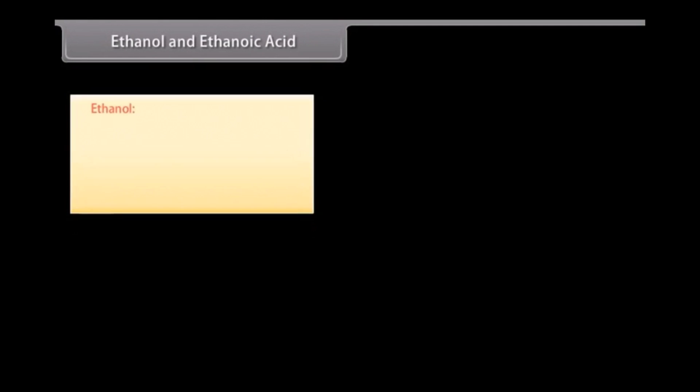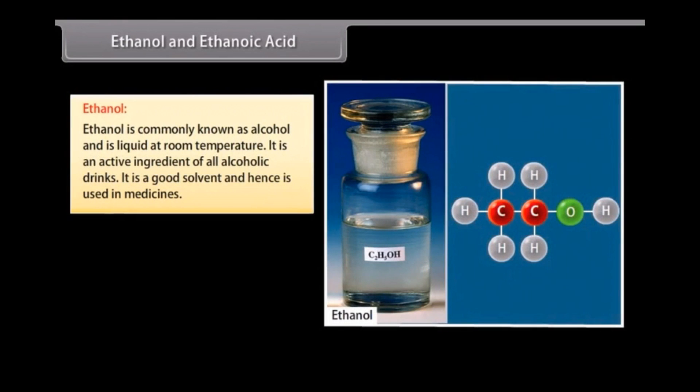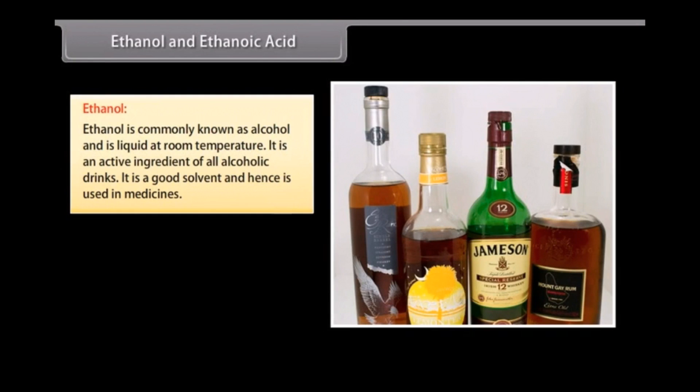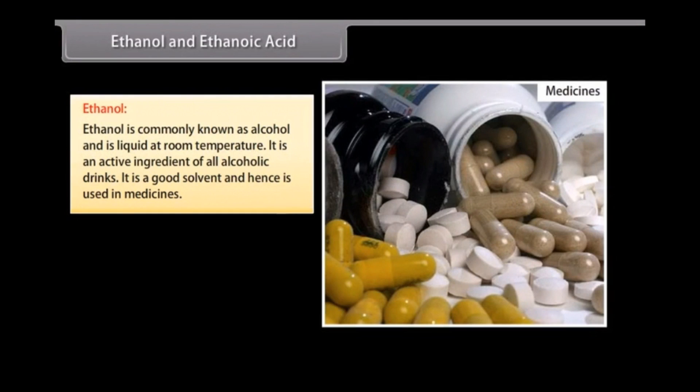Ethanol and ethanoic acid. Ethanol. Ethanol is commonly known as alcohol and is liquid at room temperature. It is an active ingredient of all alcoholic drinks. It is a good solvent and hence is used in medicines. Consuming small quantities of dilute ethanol leads to drunkenness, but intake of a small quantity of pure ethanol can lead to death.